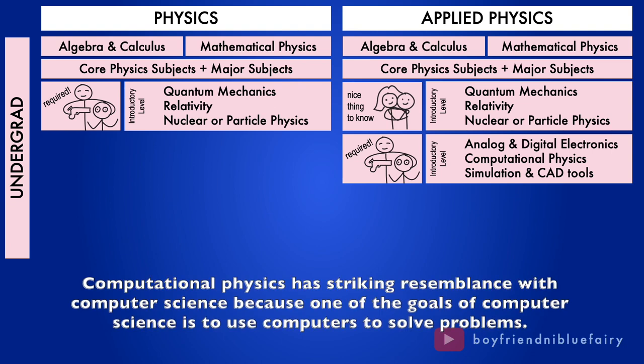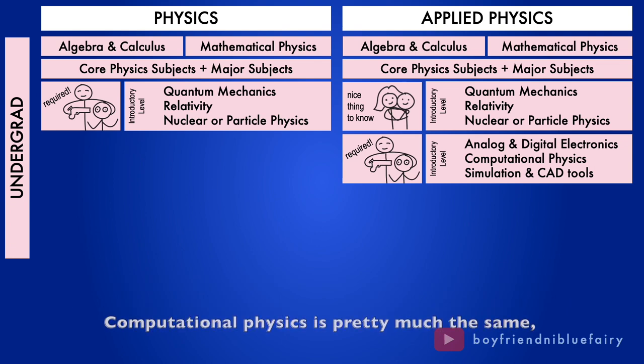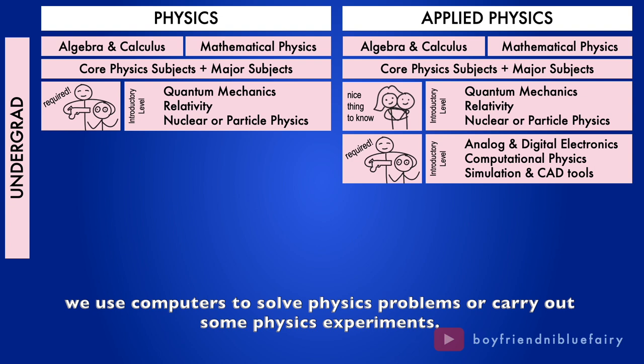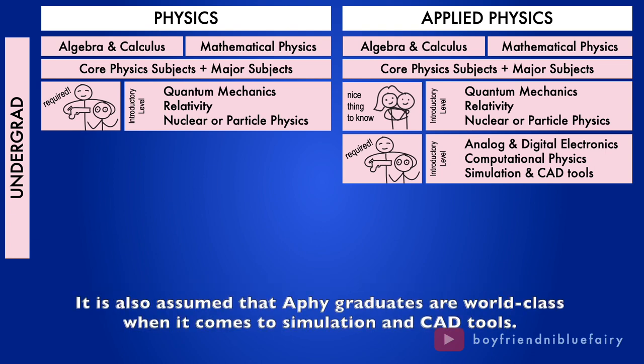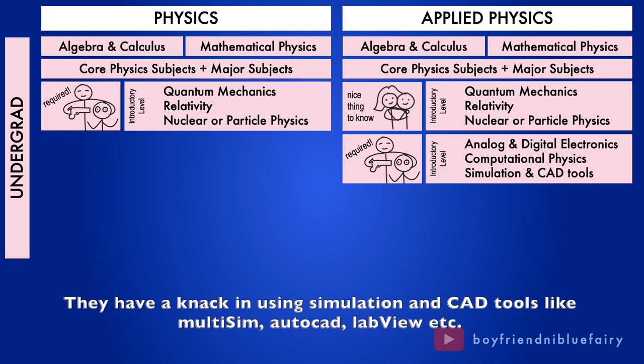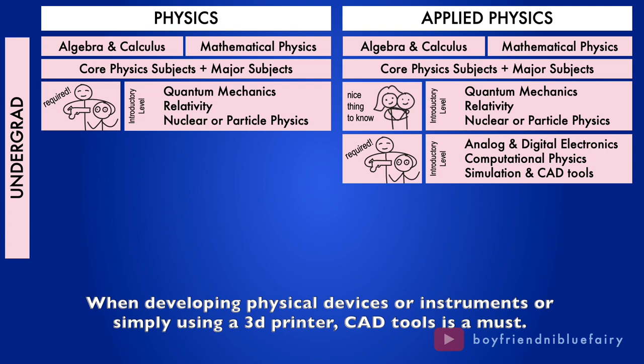Computational physics has striking resemblance with computer science because one of the goals of computer science is to use computers to solve problems. Computational physics is pretty much the same. We use computers to solve physics problems or carry out some physics experiments. Because in reality, some experiments are too expensive to carry out or impossible to perform due to physical requirements or space and time constraints. It is also assumed that AFI graduates are world class when it comes to simulation and CAD tools. They have a knack in using simulation and CAD tools like Multisim, AutoCAD, LabVIEW, etc. When developing physical devices or instruments or simply using a 3D printer, CAD tools is a must.